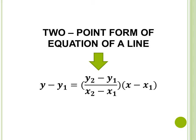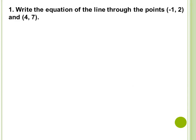Let's have examples. Number 1: Write the equation of a line through the points (negative 1, 2) and (4, 7). First thing to do, let us assign values for x sub 1, y sub 1, x sub 2, y sub 2. Dahil two points ang given natin, dapat alam natin kung alin yung first point at second point.